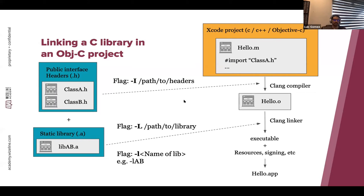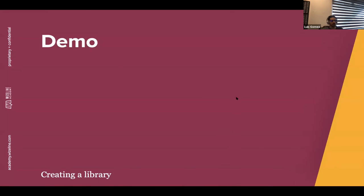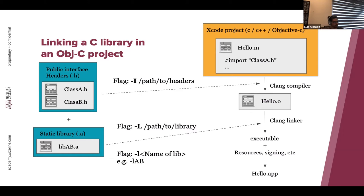So how can we link this library in another project? Now that we have it, we want to use it. On the left side we have the library and its header; on the right side we have an Objective-C project. The implementation file, hello.m, is importing the header of Class A. If we try to compile the project at this point it's going to fail, because the compiler doesn't know where the header is located. To make the header visible to the compiler, we need to pass the -I flag followed by the header's path.